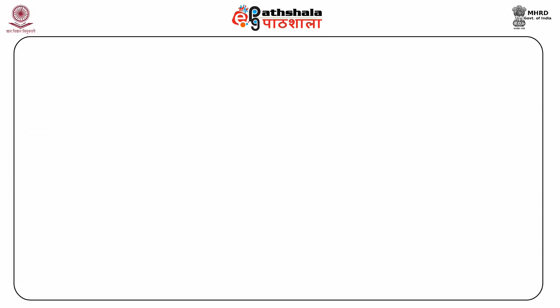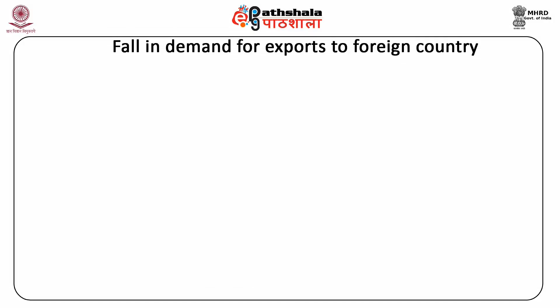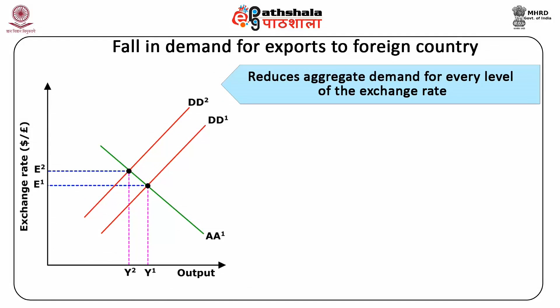Symmetry: under floating exchange rates, two asymmetries present in the fixed exchange rate system would not occur. First, under fixed rates, central banks fixed currencies to the dollar and accumulated dollars as international reserves, with the US Federal Reserve playing the leading role in determining money supply. Second, any foreign country could devalue against the dollar but the US had no option of devaluing against foreign currencies. These asymmetries disappear under floating rates, as countries no longer fix dollar exchange rates and each country can regulate monetary conditions at home.